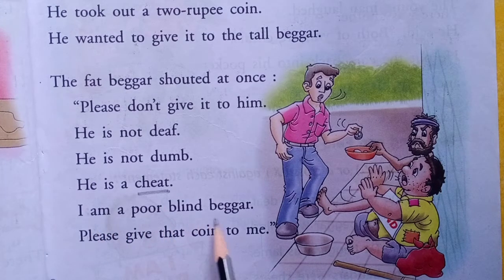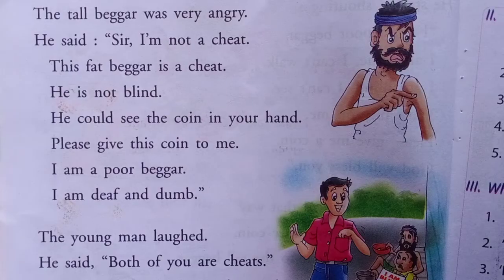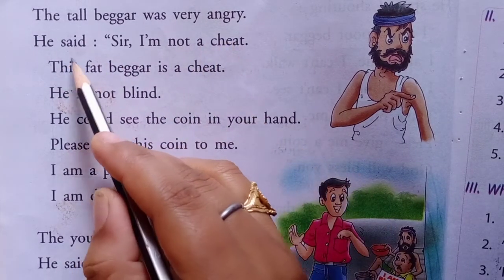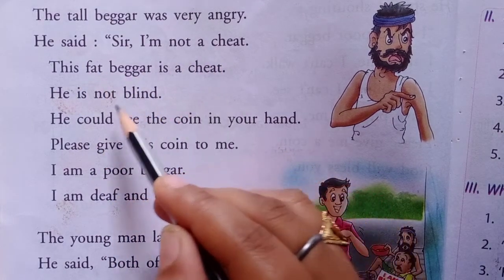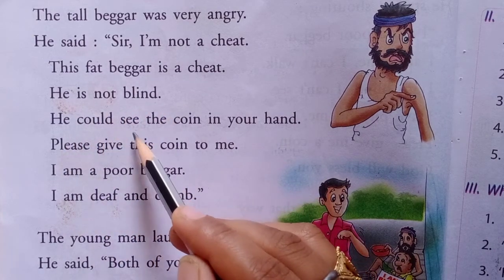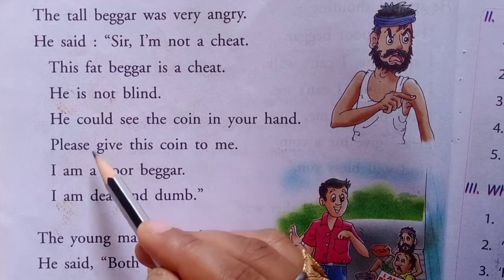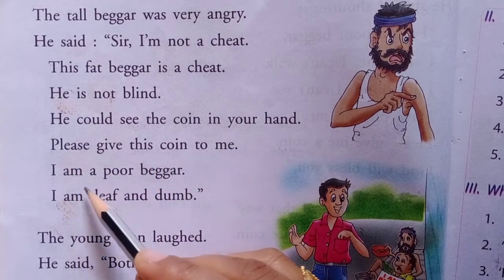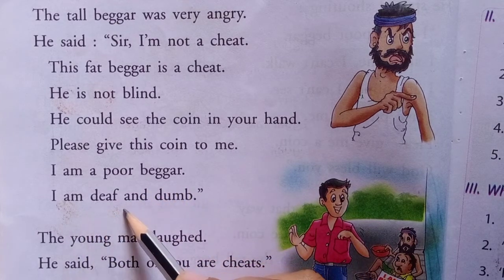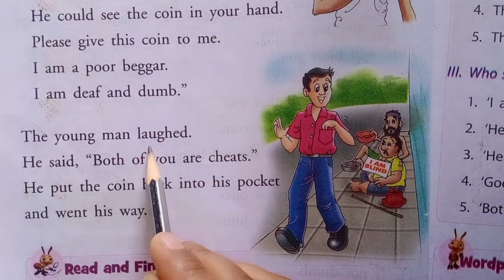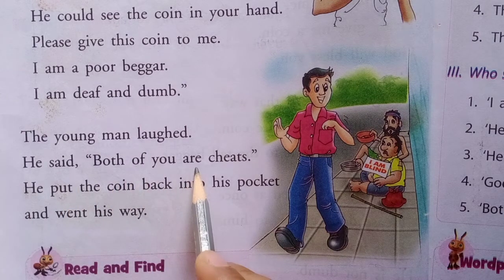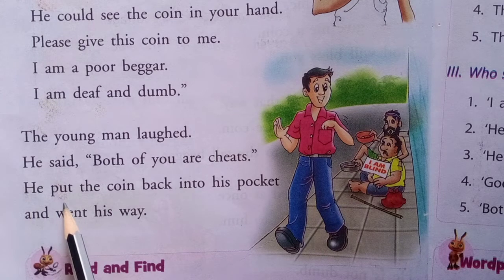'I am a poor blind beggar — please give that coin to me.' The tall beggar was very angry. He said, 'I am not a cheat. This fat beggar is a cheat. He is not blind. He could see the coin in your hand. Please give this coin to me. I am a poor beggar — I am deaf and dumb.' The young man laughed and said, 'Both of you are cheats.' He put the coin back into his pocket and went his way.